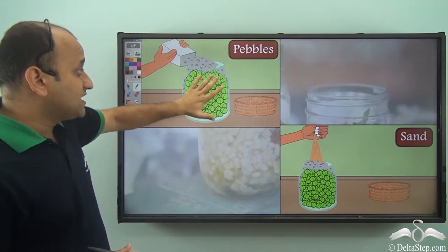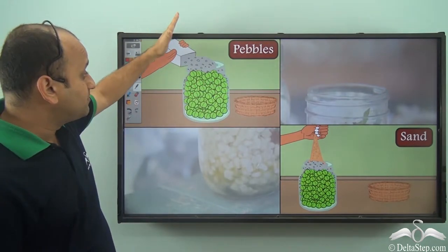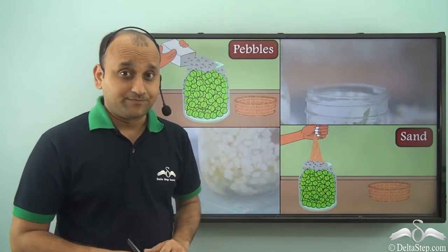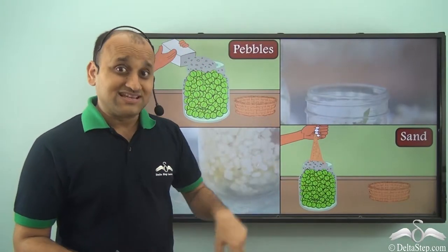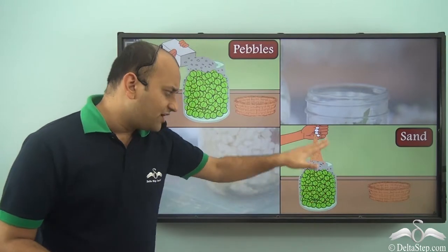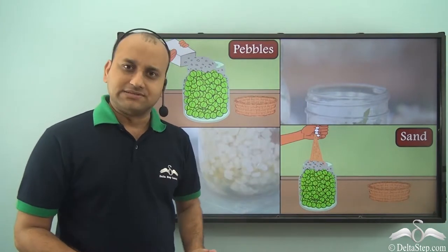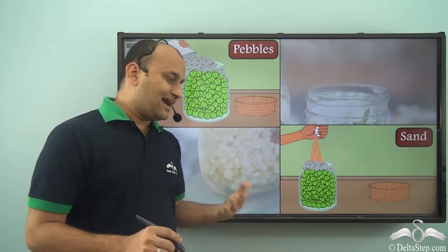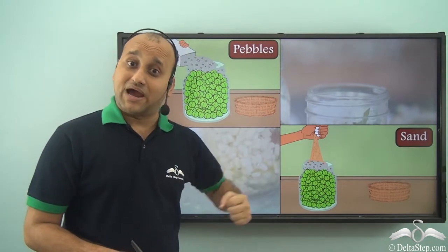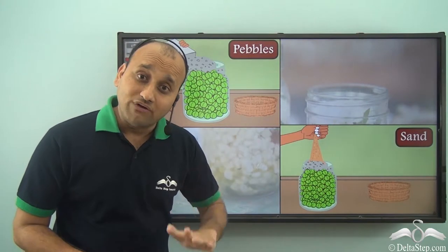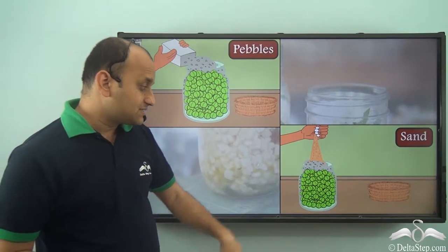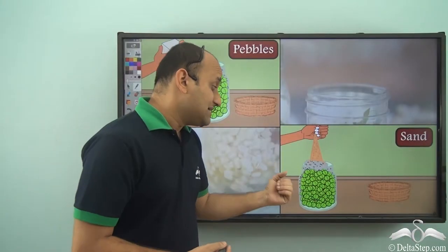As a result, in the same jar which looked full, the professor was able to add more pebbles. Then he said he has some sand and asked the students if he could add sand to the jar. The students thought the jar was already filled with balls and then pebbles, so there was no space — they said you cannot add sand. But the professor tried it and even the sand went inside the jar. Why? Because the gap between the balls was large enough for the pebbles, and the particles of sand are much smaller than the gap between the pebbles — so the sand took up the space between the pebbles.